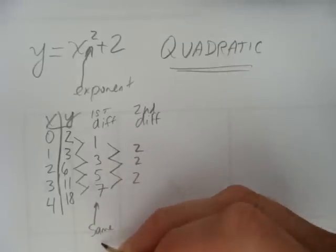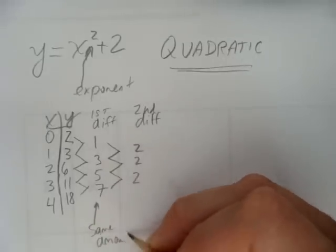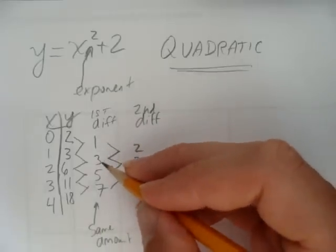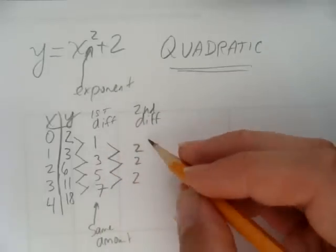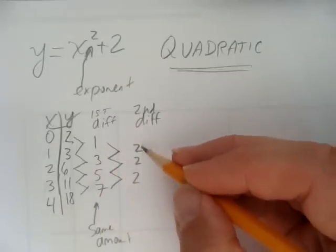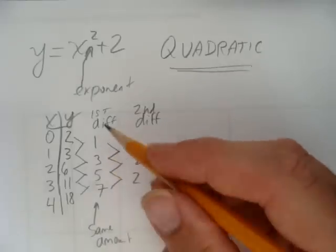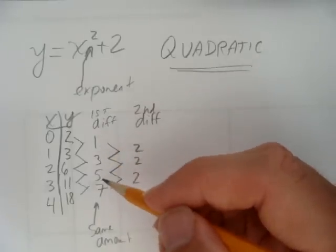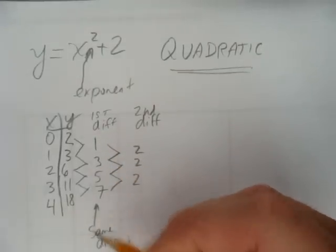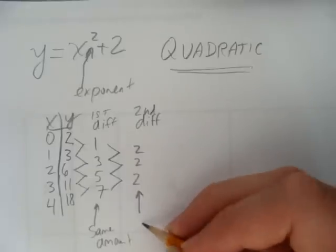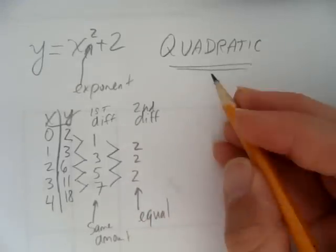It doesn't have to be these exact numbers. It could be 1, 7, and so on, going in a different pattern. Neither does the second difference have to be 2. It could be all 3's. But whenever you see first differences going up in an equal amount, the same amount, and you see the second differences are all equal, you know it's quadratic.